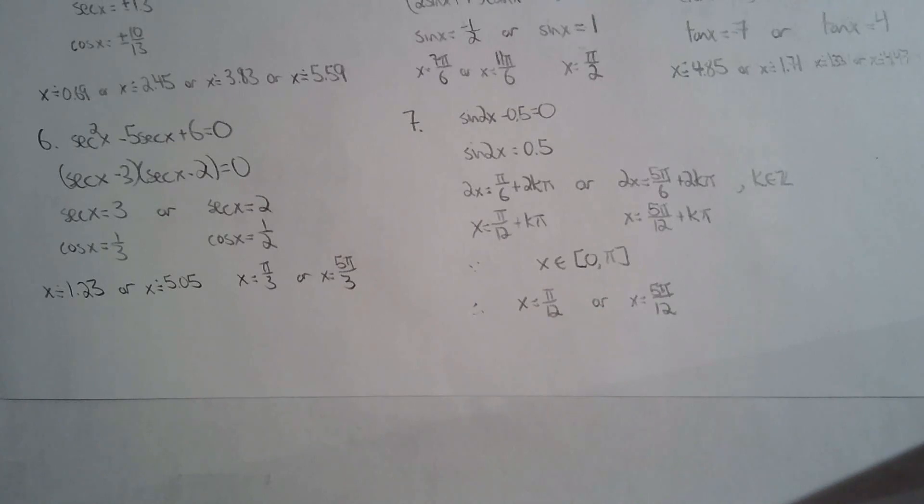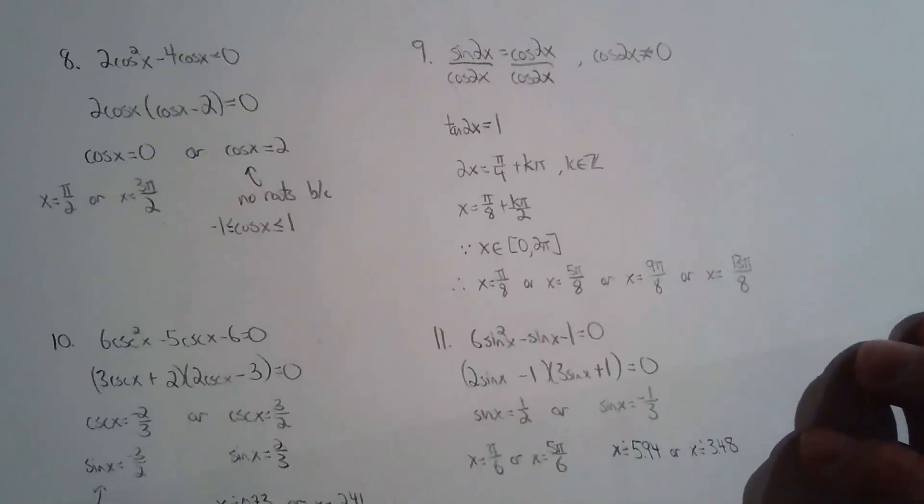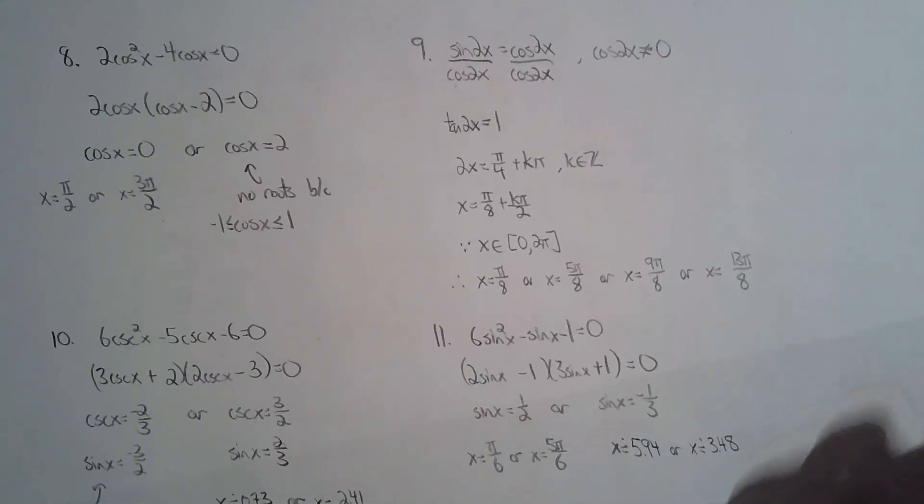For number eight, just common factor cos x. Here, please don't divide both sides by cos x because then you will lose solutions to your equation. Factor cos x as a common factor and then solve for cos x equals zero.